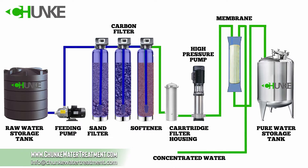After pre-treatment, our water is ready to go to the reverse osmosis membrane. Before the RO membrane, to ensure there are no particles in the water, it passes through a cartridge filter housing. We generally use a two or five micron PP cartridge filter.